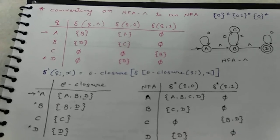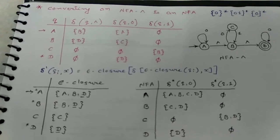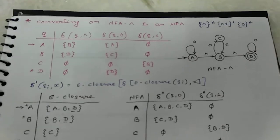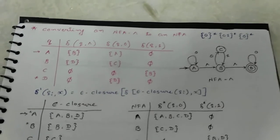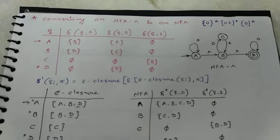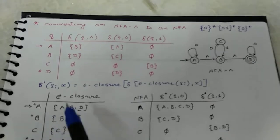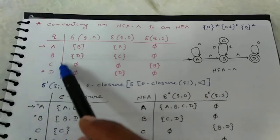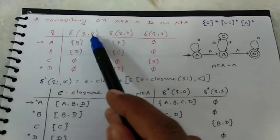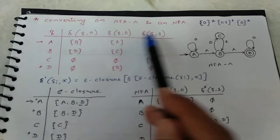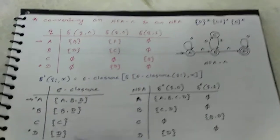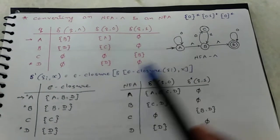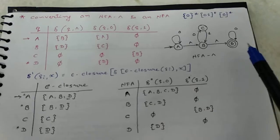Hello friends, today I discuss about converting an NFA-epsilon to NFA. Here a transition table is given from state A, B, C, D to inputs epsilon, 0, and 1. According to this transition table, draw NFA-epsilon.